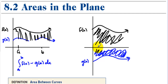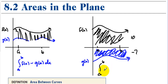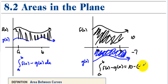The nice part about this is if you do top minus bottom, you're just fine. From a to b, say the area under f was 10 and the area under g was negative 7. You do the integral from a to b of f(x) minus g(x). The area is not going to be 3 — it's 10 minus negative 7, which equals 17. That's the total area in between these two functions.